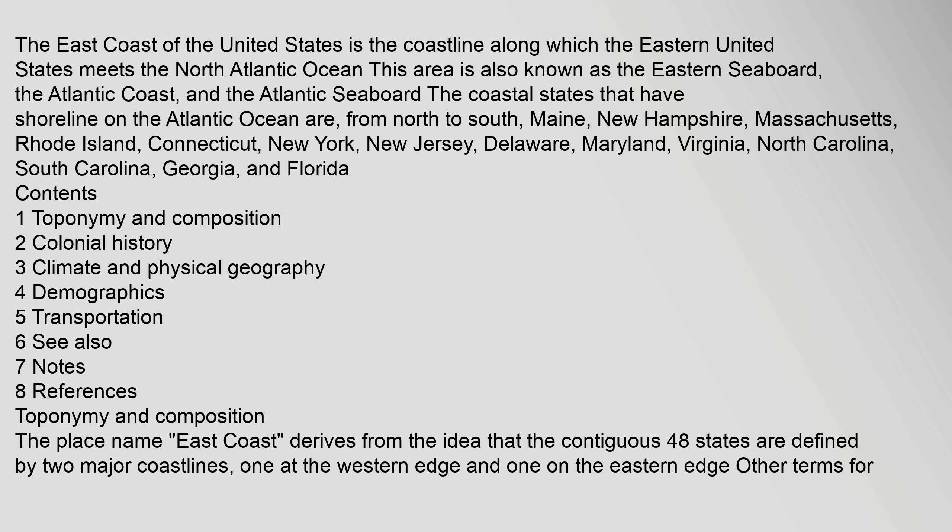The coastal states that have shoreline on the Atlantic Ocean are, from north to south: Maine, New Hampshire, Massachusetts, Rhode Island, Connecticut, New York, New Jersey, Delaware, Maryland, Virginia, North Carolina, South Carolina, Georgia, and Florida.